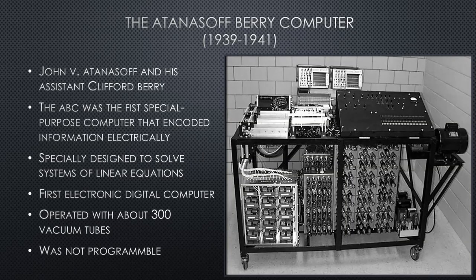Moving to digital and electronic computers: the first is the Atanasoff-Berry Computer, shortened as the ABC Computer. This was invented by John Atanasoff and his assistant Clifford Berry between 1939 and 1941. The ABC was the first special-purpose computer that encoded information electrically — a movement from mechanical calculating devices to actual electrical computers. It was specially designed to solve systems of linear equations and is the first electronic digital computer, operating with about 300 vacuum tubes.